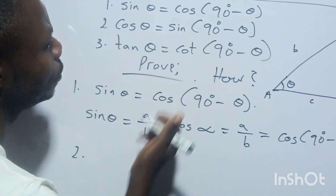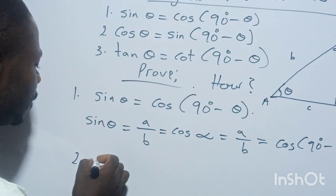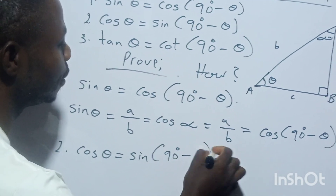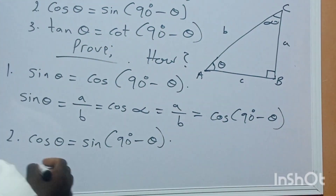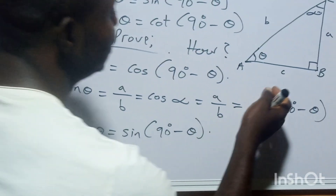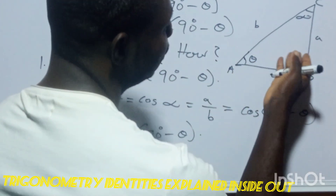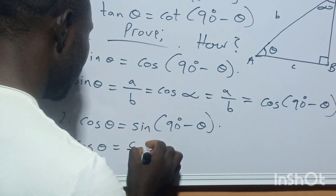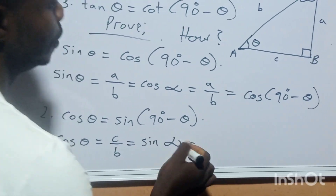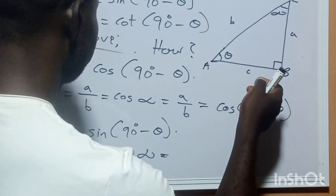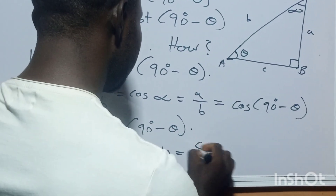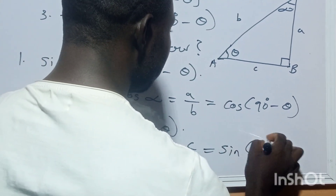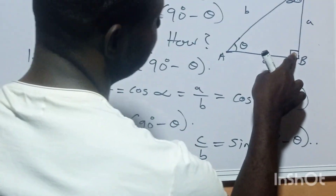So let's move to number two: cos α equals sin(90° − θ). Cos α is equal to sin(90° − θ). Let's check from here. Now remember, cos θ is the adjacent. Where is the adjacent of this side? C over hypotenuse B. So we have C over B, which is equal to sin α. We now have sin(90° − θ).